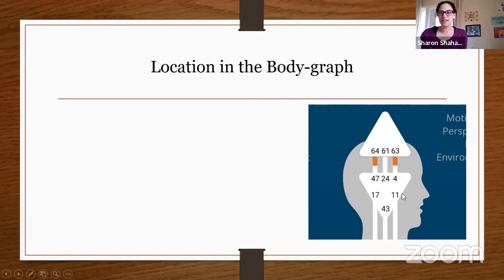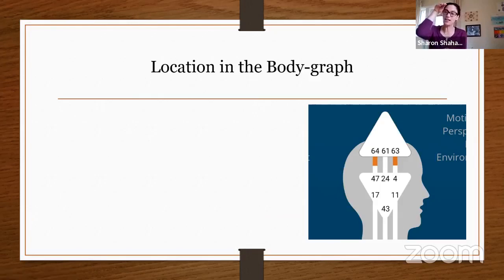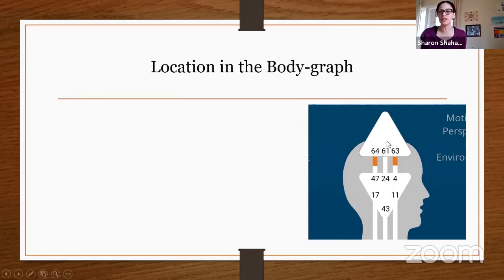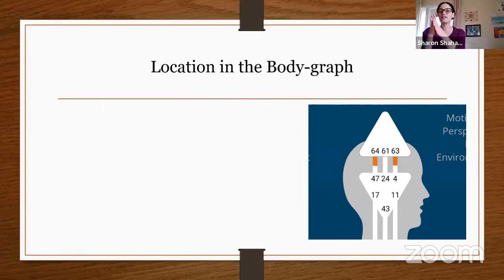The location of Gate 63 in the body graph: it's in the head center, at the crown. Gate 64 is on the other end — currently in the earth. Whenever 63 is in the sun, 64 is in the earth — these gates are polarities, mirrors of each other, traveling around the wheel together. In the middle we have Gate 61, which is individual inspiration. Gate 63 is logical inspiration, Gate 61 is individual inspiration, and Gate 64 is abstract collective inspiration — the storytelling side.